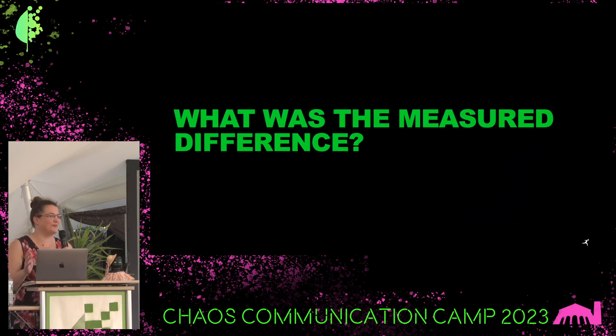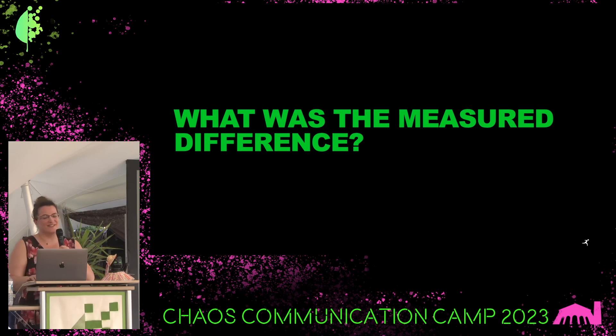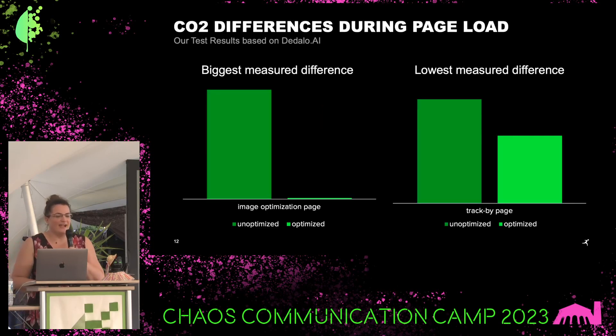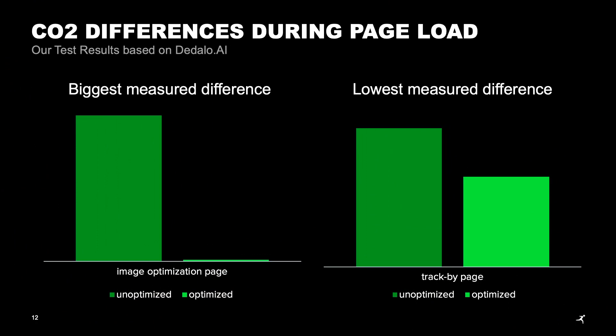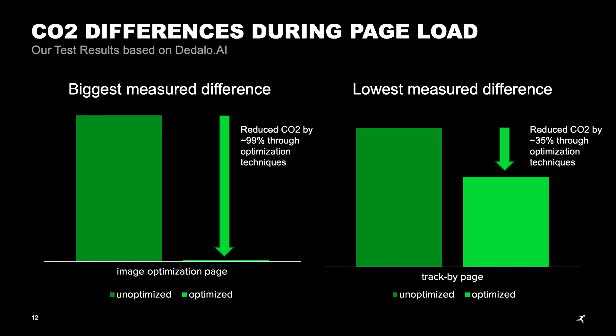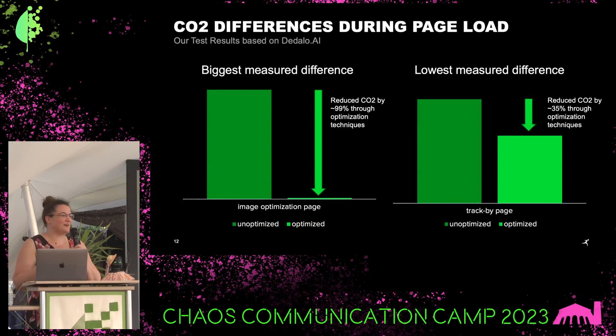Now you are for sure curious about what was the difference that we measured, even though this talk is not about the POC itself. I'm just showing you as a highlight the difference. You can see here for two of the pages where we have the extremist test results, the difference ranges from 35% to 99% of savings on CO2. This is measured with Dedalo AI. I'm saying this, it's measured, it's not the real CO2, and I'm also explicitly naming the tool because in each tool we will get a different result. So, awesome — green coding matters, don't write shitty code, optimize your code, take care that your code runs really smoothly and is efficient.